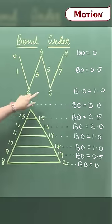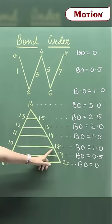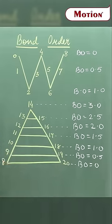So, if you calculate the total number of electrons, for example, if it's 6, the bond order will be 1. If it's 18, the bond order will be 1. If it's 20, then the bond order will be 0.